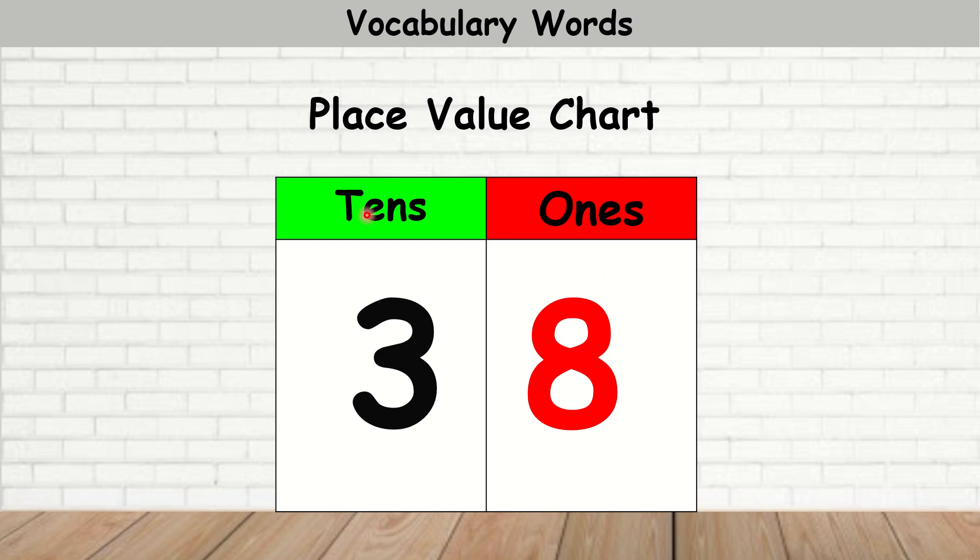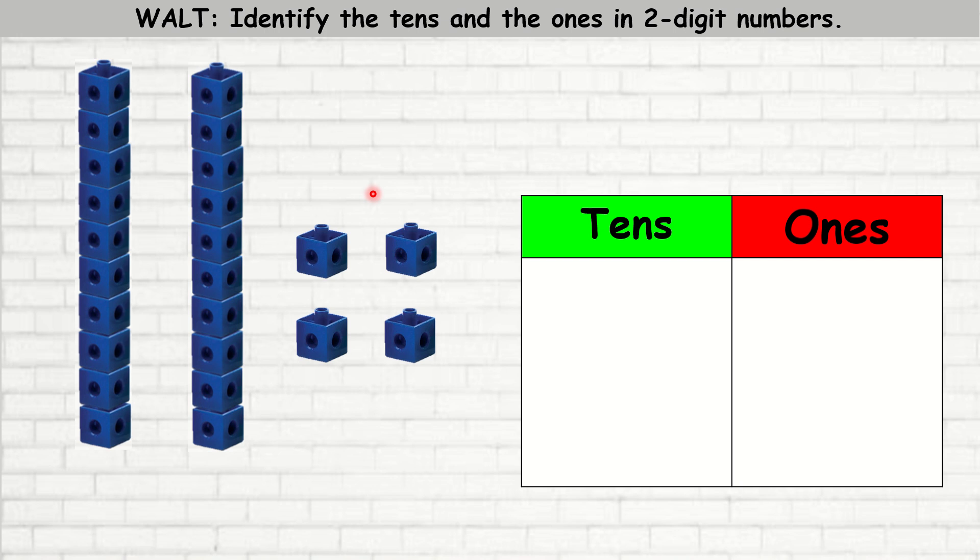So here's eight ones and three tens. We're going to use the cubes that we have, and we're going to write that number in our place value chart.